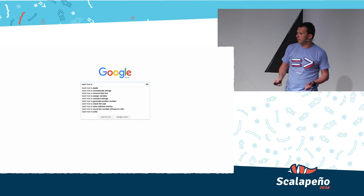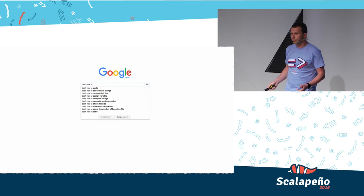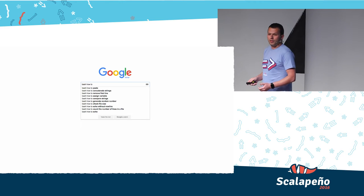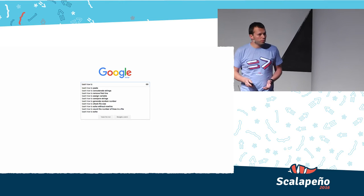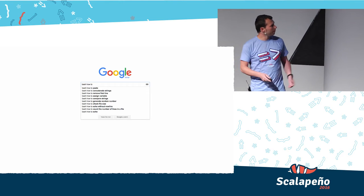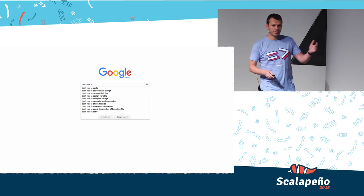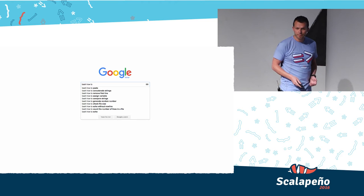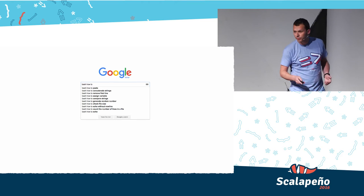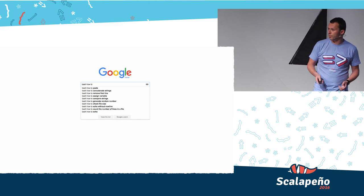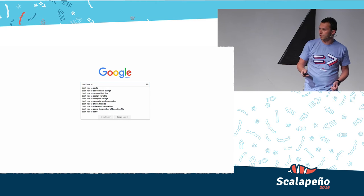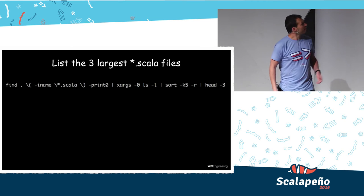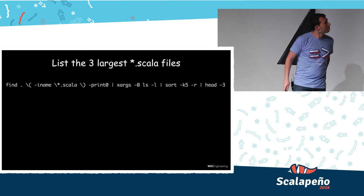Even if it's something simple, like a for loop or an if statement. And after you Google for it, you find many results. So how do you pick one? Usually you take the one with the most votes on Stack Overflow, right? And you get something like this.